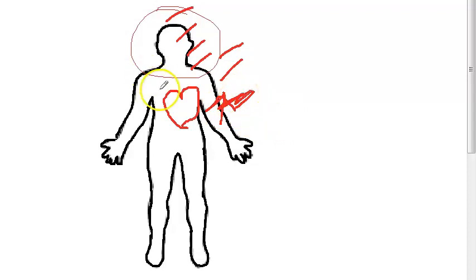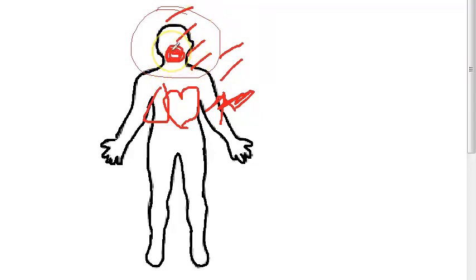Respiratory system: tachypnea, dyspnea, pulmonary edema, and a bitter almond odor of breath. Bitter almond odor of breath is a unique and important sign in cyanide poisoning.